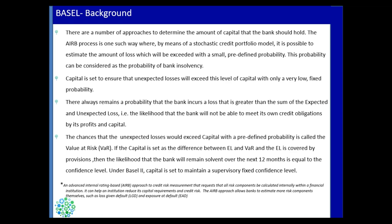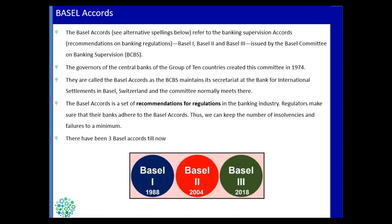Now we will talk about Basel Accords — how Basel came into the picture, what is the history. Basel is divided into three events: Basel 1, Basel 2, and Basel 3, and they are issued by the Basel Committee on Banking Supervision. Basel is a place in Switzerland where this committee sits, and they have come up with these rules and regulations which help banks maintain a healthy business scenario and keep the economy moving.